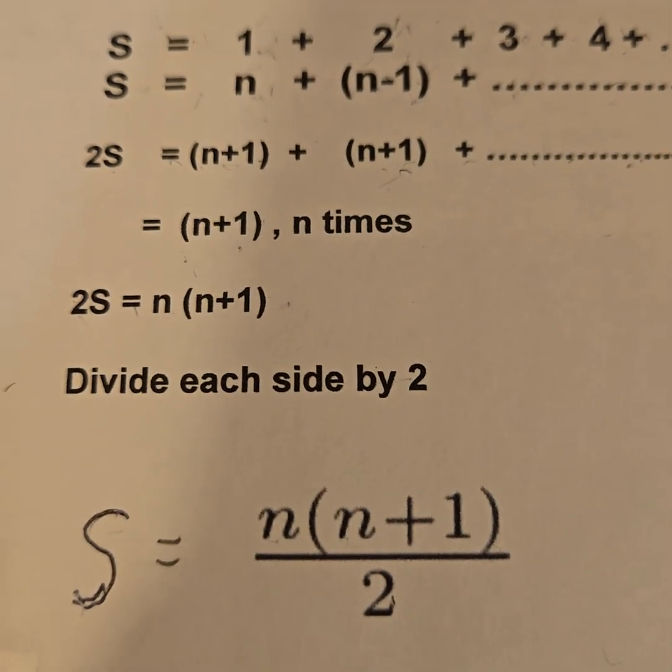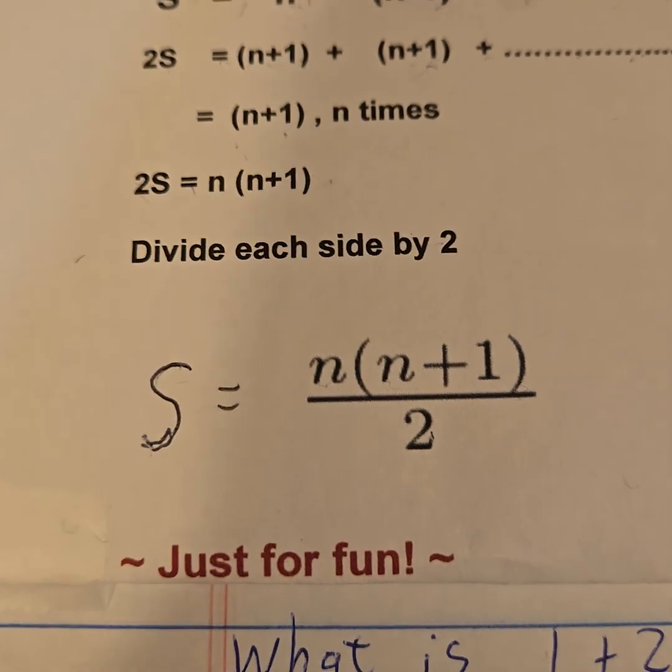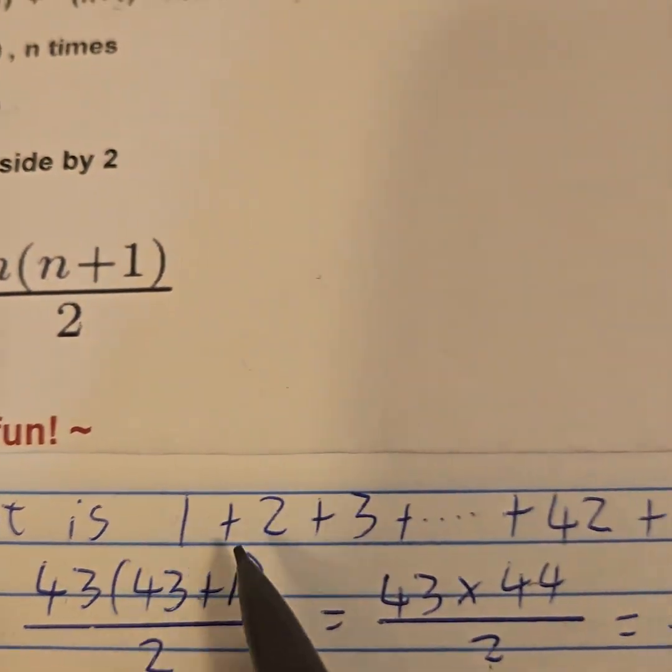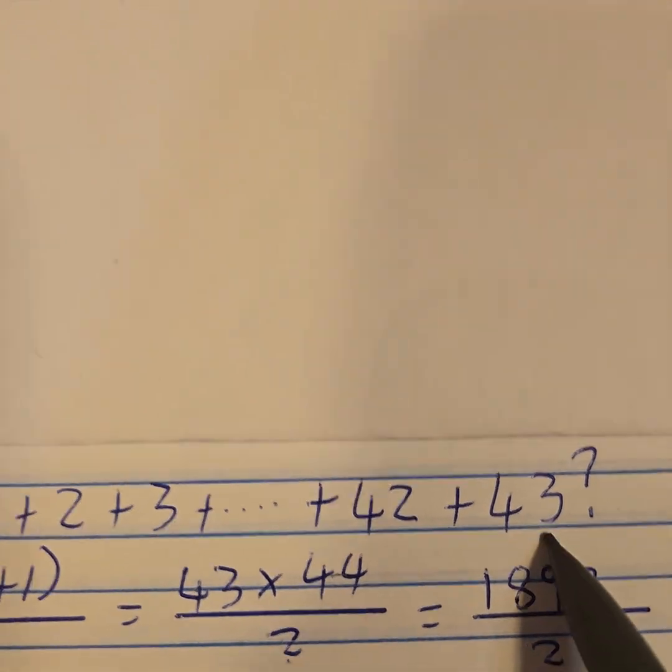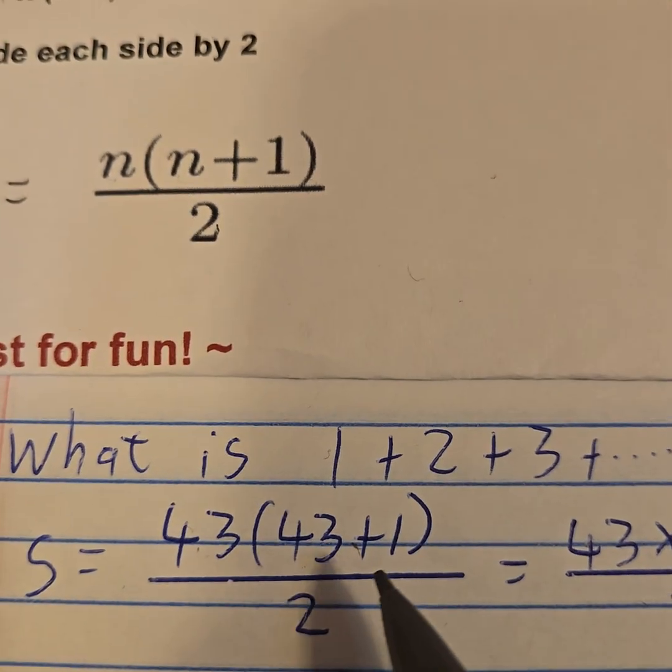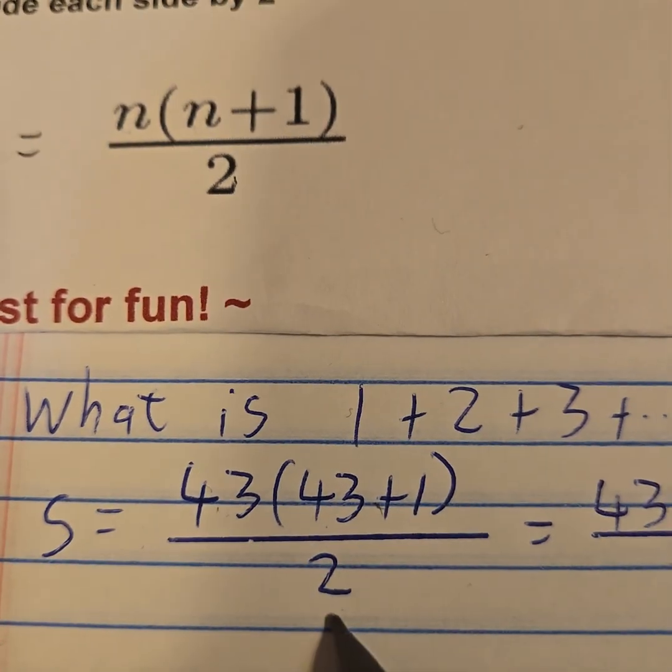And now that I've proven it, just for fun, what is the sum of 1 + 2 + 3 all the way until 43? It's based on this formula: it's 43 times (43+1) all divided by 2, which is 43 times 44 divided by 2.